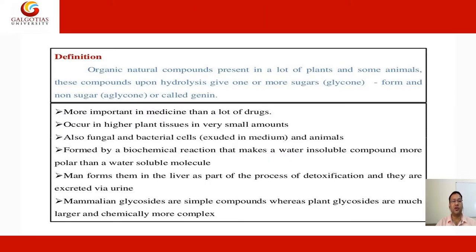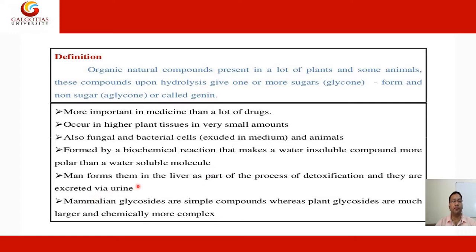The definition of glycoside: it is an organic natural compound present in many plants and some animals. Upon hydrolysis, these compounds give one or more sugar groups called the glycon part, and a non-sugar group called the aglycon or genin. They are more important in medicine, as many drugs occur in higher plants in very small amounts. Fungal and bacterial cells also produce them, and in animals they are formed by biochemical reactions that make water-insoluble compounds more polar and water-soluble. In mammals, they are formed in the liver as part of detoxification and excreted via urine. Mammalian glycosides are simple compounds, whereas in plants they are more complex and larger.